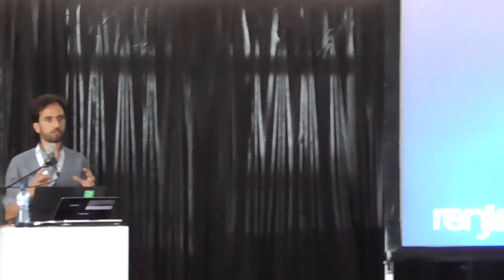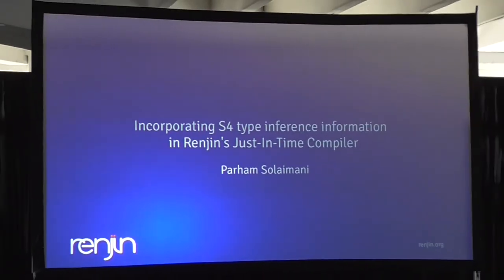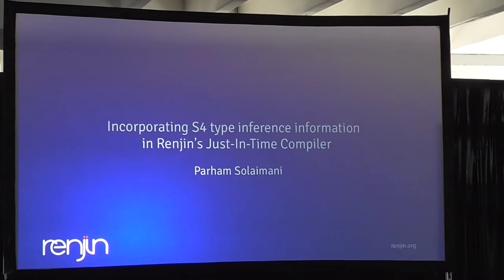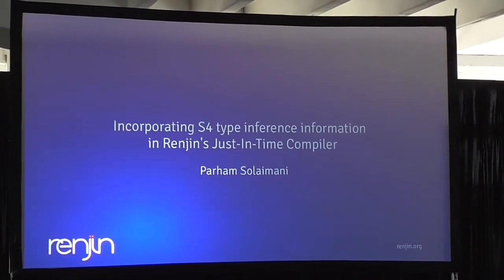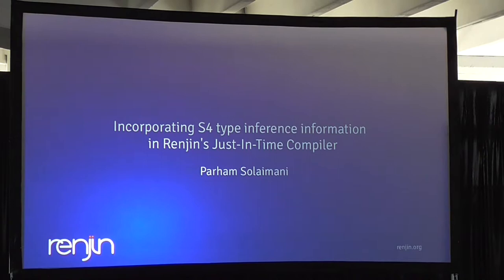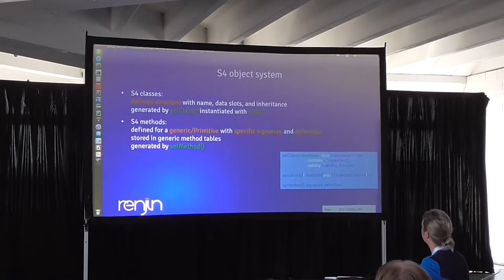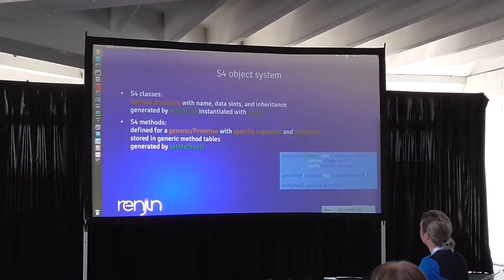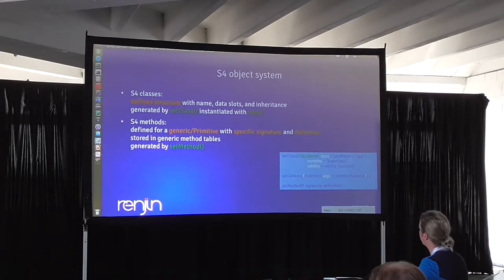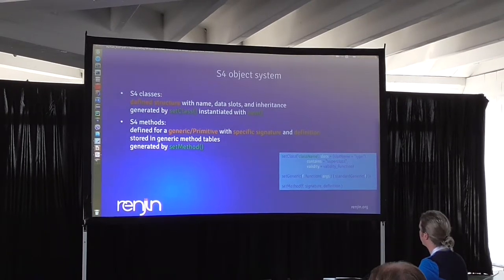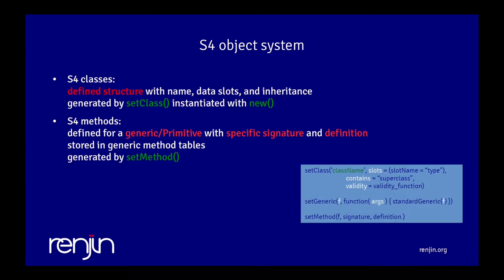The S4 object system consists of different components, one of them being the S4 classes, which are basically the structures that define the data. The classes are set with setClass and instantiated with new, and they contain slots that contain the data. They have a name and a slot that contains inheritance information - what are the super classes of these classes.